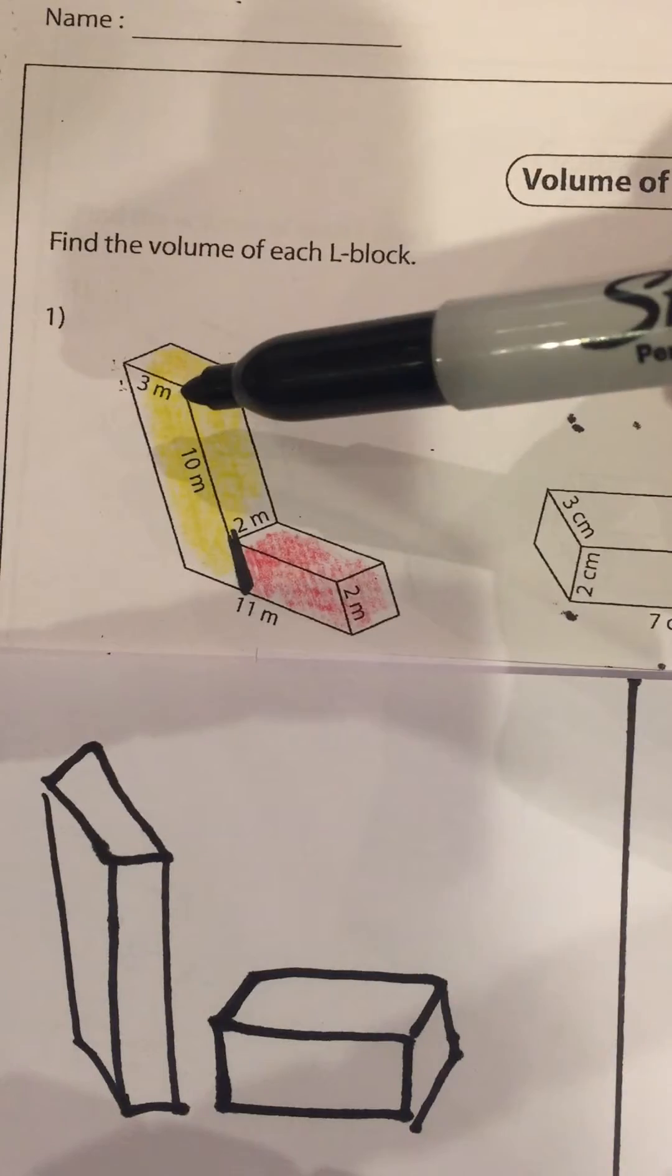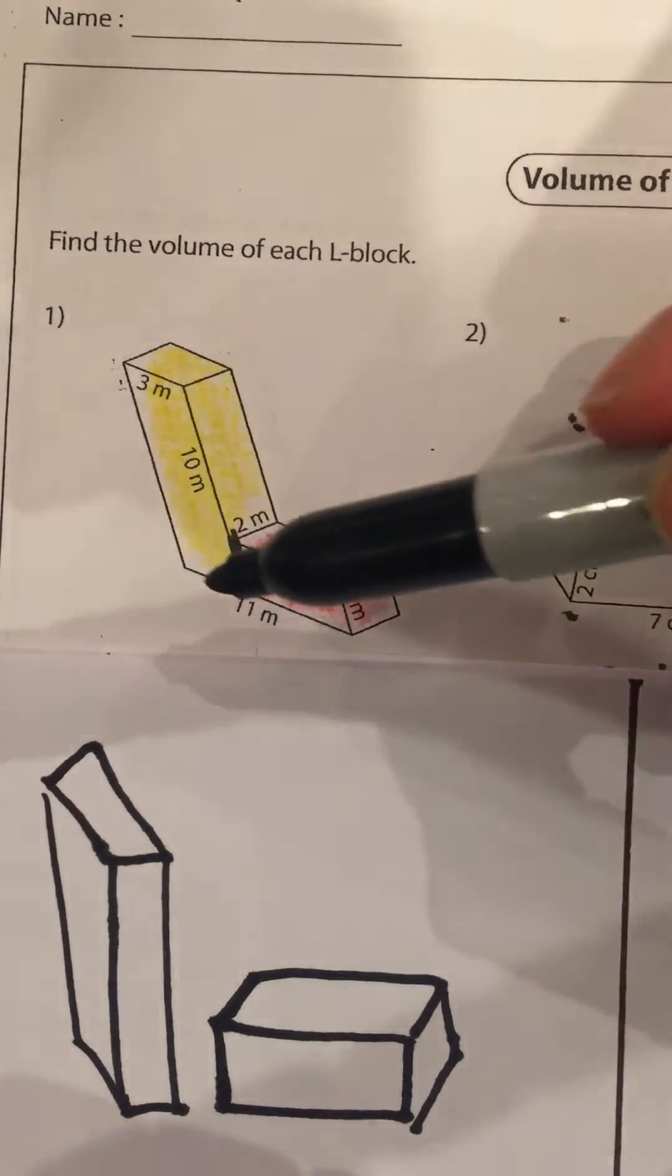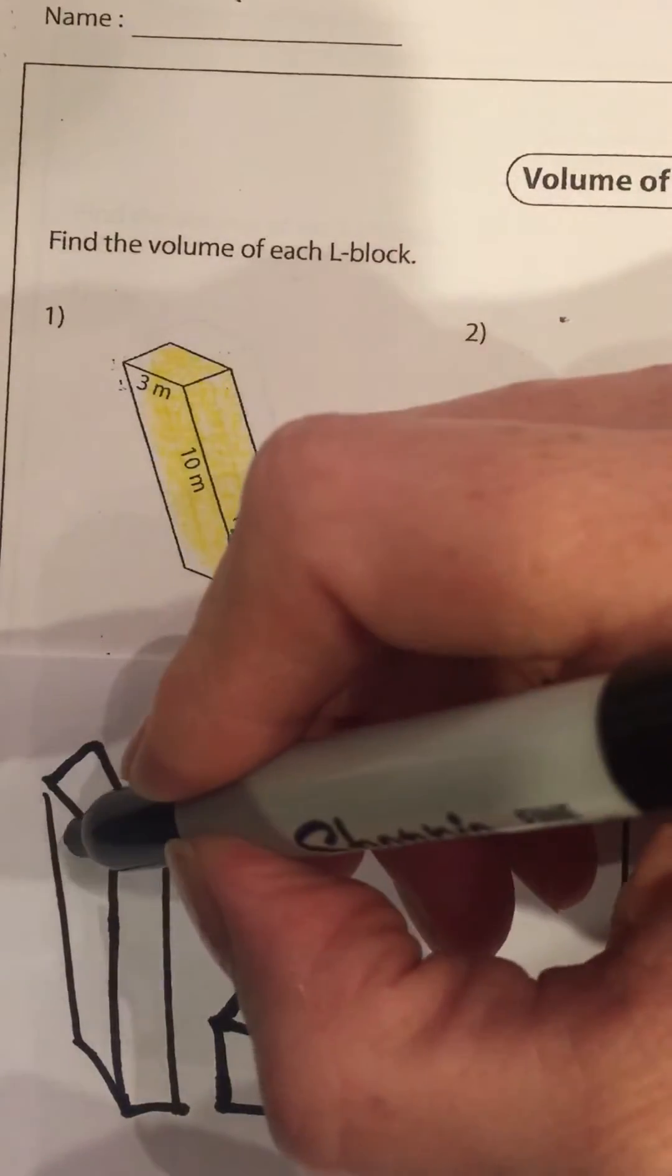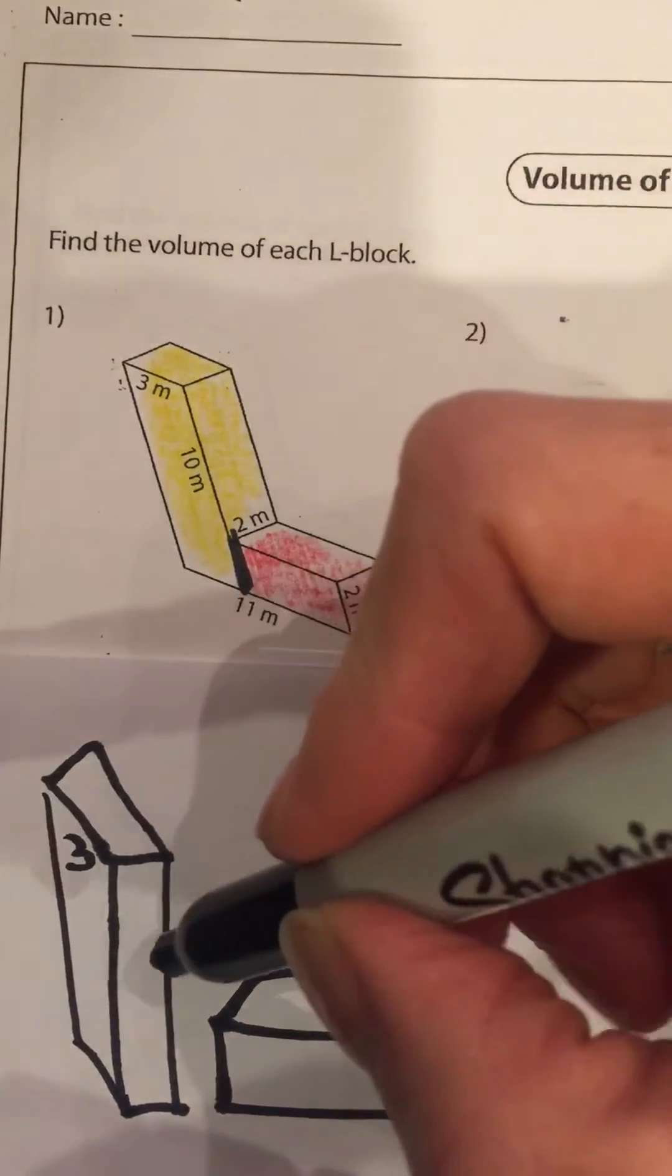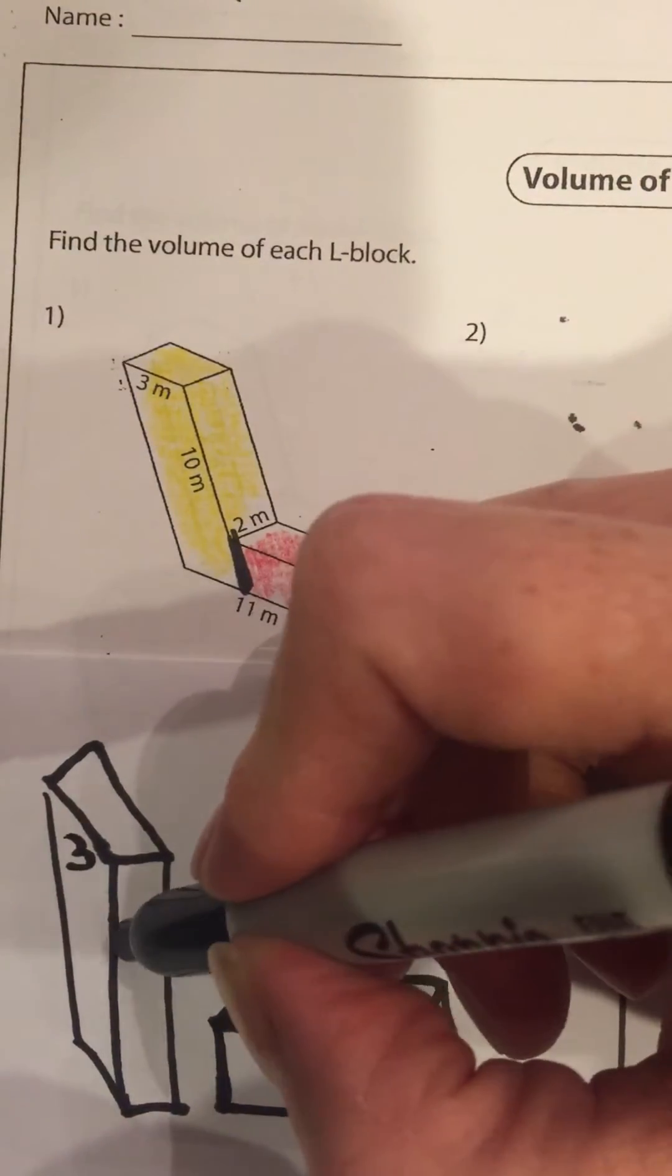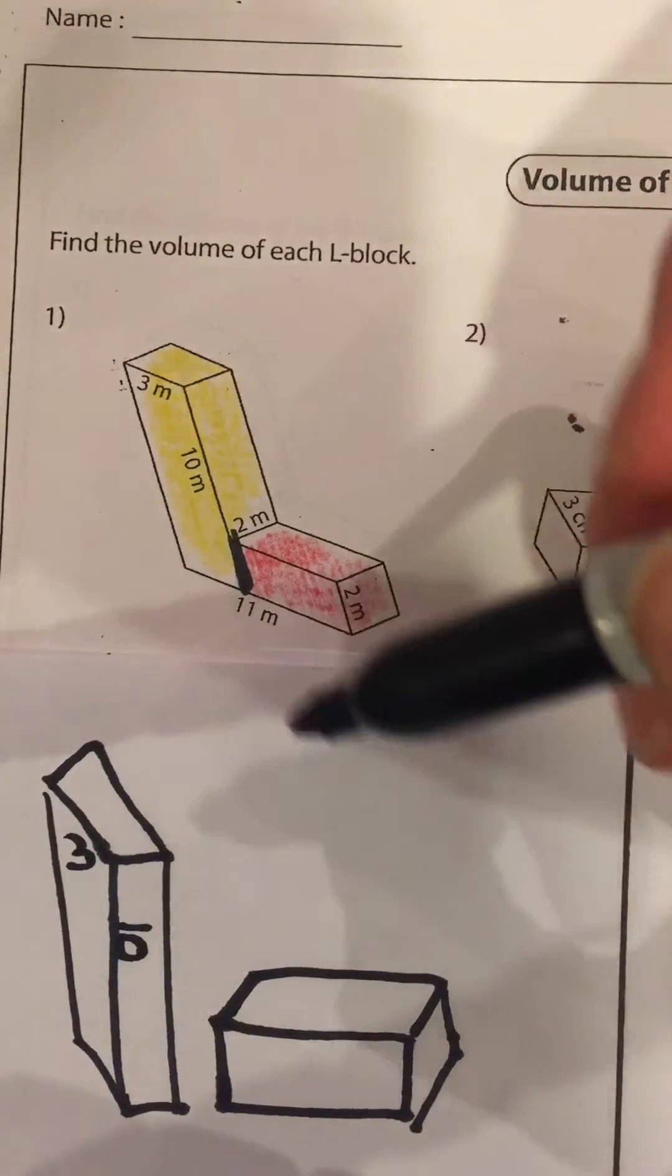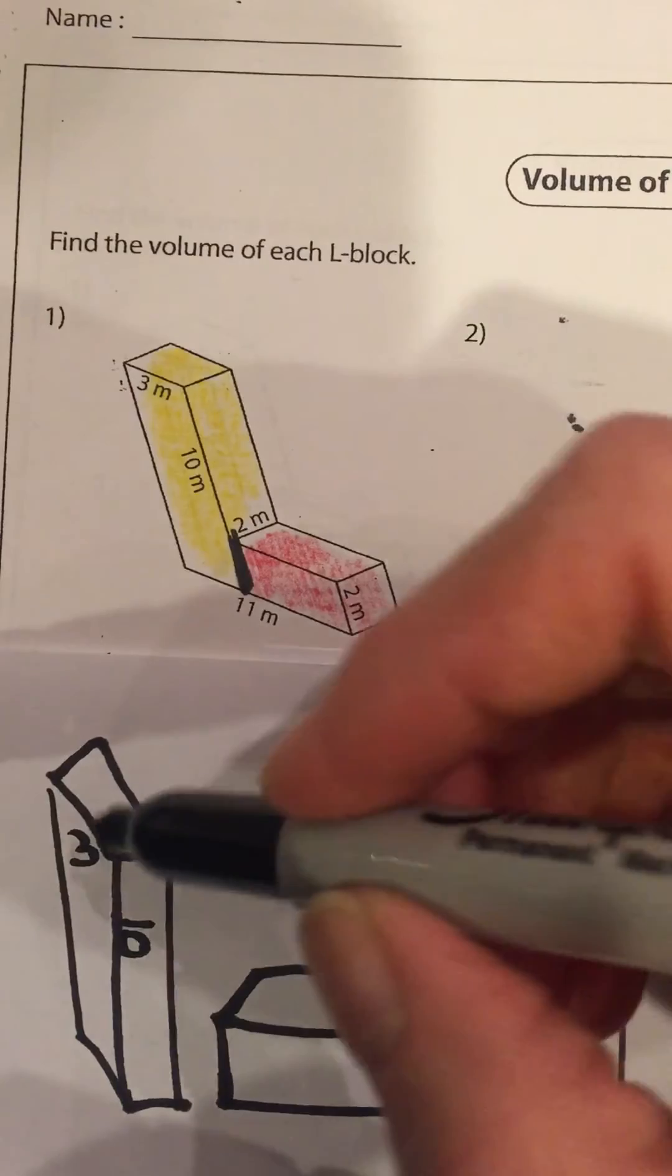All right, let's label our new dimensions. Let's start out with the easiest ones. Three meters, we're going to record that right here and this will stay ten meters, and the depth here will remain two meters.